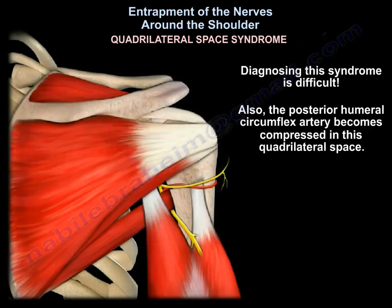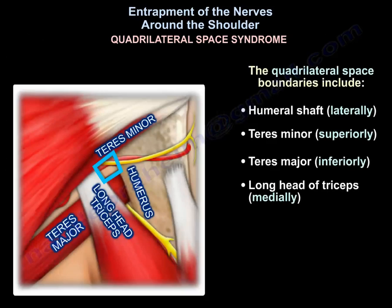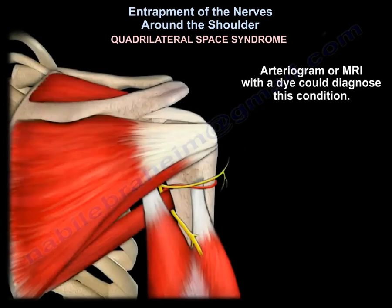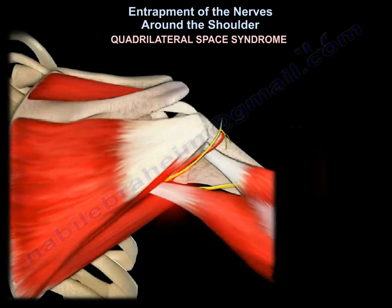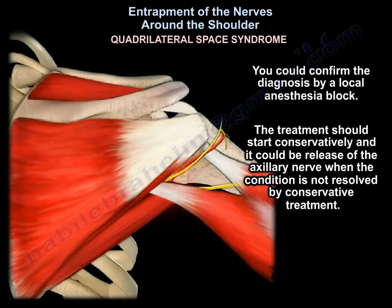Diagnosing this syndrome is difficult. The posterior humeral circumflex artery also becomes compressed in the quadrilateral space. The quadrilateral space boundaries include the humeral shaft laterally, the teres minor superiorly, the teres major inferiorly, and the long head of the triceps medially. Arteriogram or MRI with dye can diagnose this condition, and you can confirm the diagnosis with a local anesthesia block.